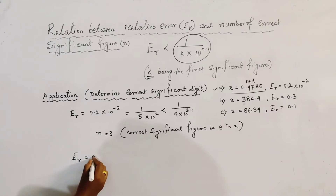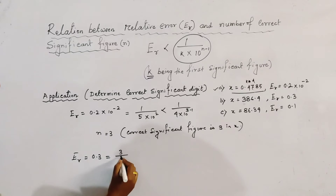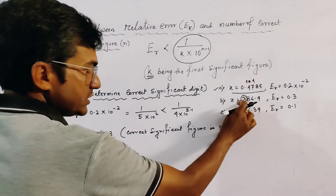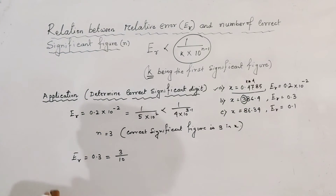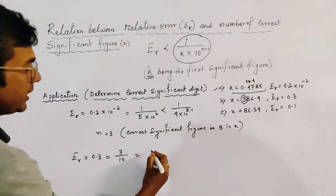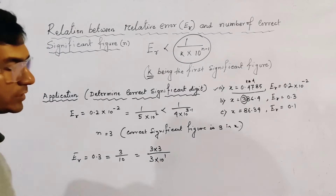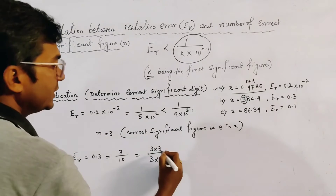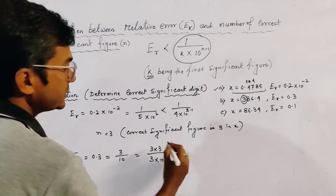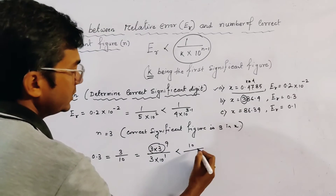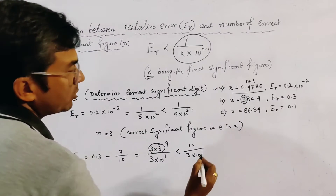In the second problem, er is equal to 0.3, which can be written as 3 divided by 10. Here 3 is k, the first significant figure of the number. So we multiply to get 3 divided by 3 times 10 to the power 1, and since 3 times 3 equals 9, we approximate and write this as 3 times 10 to the power 1.